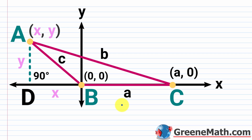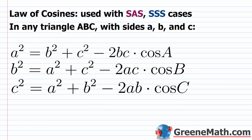Before we actually derive anything, I want to make sure the notation involved is clear. With the law of cosines you get three different formulas, and you're just going to use the formula you need based on the situation you're given. You'll have a capital A, a capital B, and a capital C, depending on the formula you're working with.